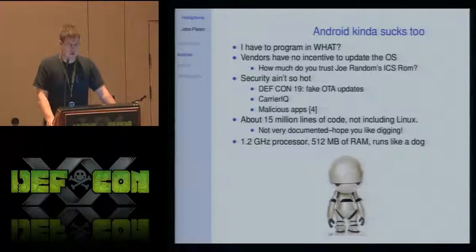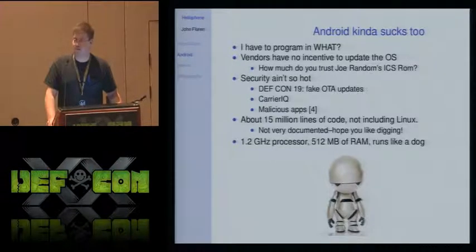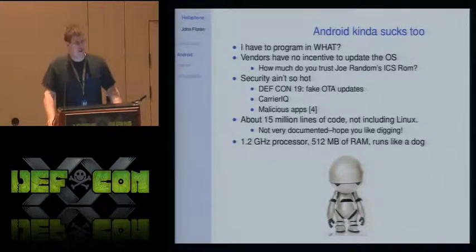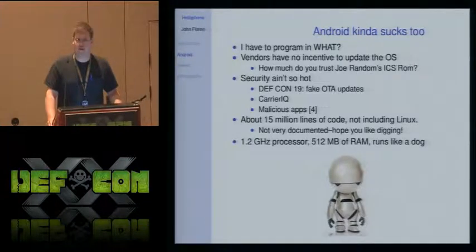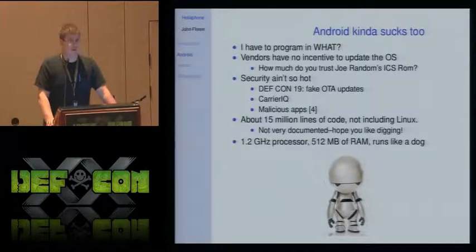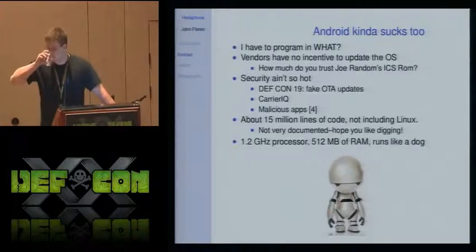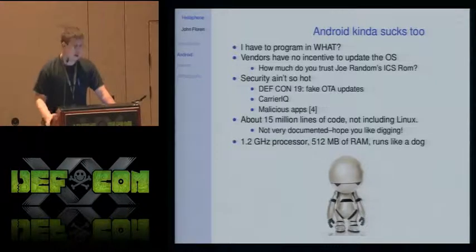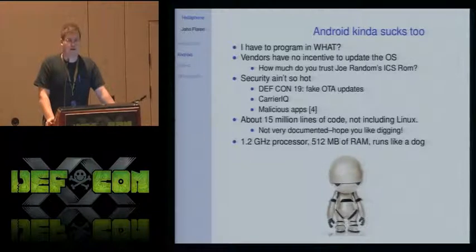I've seen more Android security issues here in talks and in the news than with other phone OSes. Last year there was a talk about fake over-the-air updates being pushed via a rogue cell tower somebody had in their backpack. I haven't seen much confirmation of that — I just saw a post on a mailing list claiming to have done it — but I believe it could be possible. Android was affected by Carrier IQ, and there's been a plethora of malicious apps. Maybe we should audit it, or strip it down to make a simpler base that we can secure better.